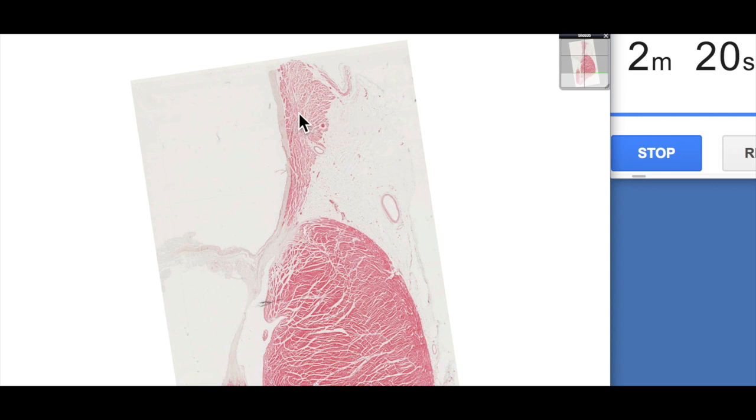Then we have the myocardium which of course is predominantly made up of cardiomyocytes and then we have the endocardium which is the internal lining which consists of a simple squamous lining and then connective tissue.